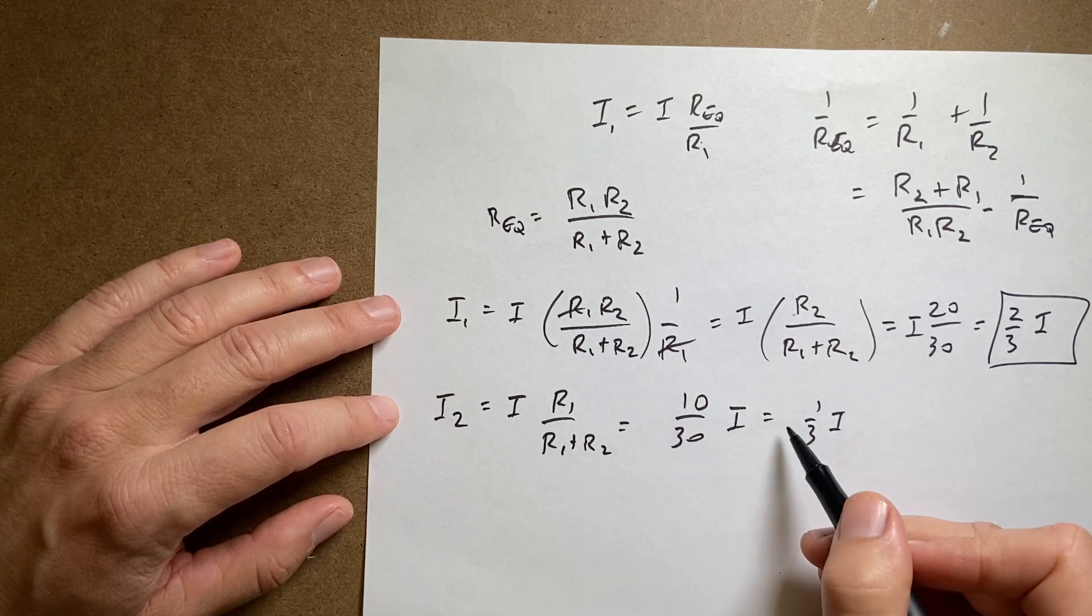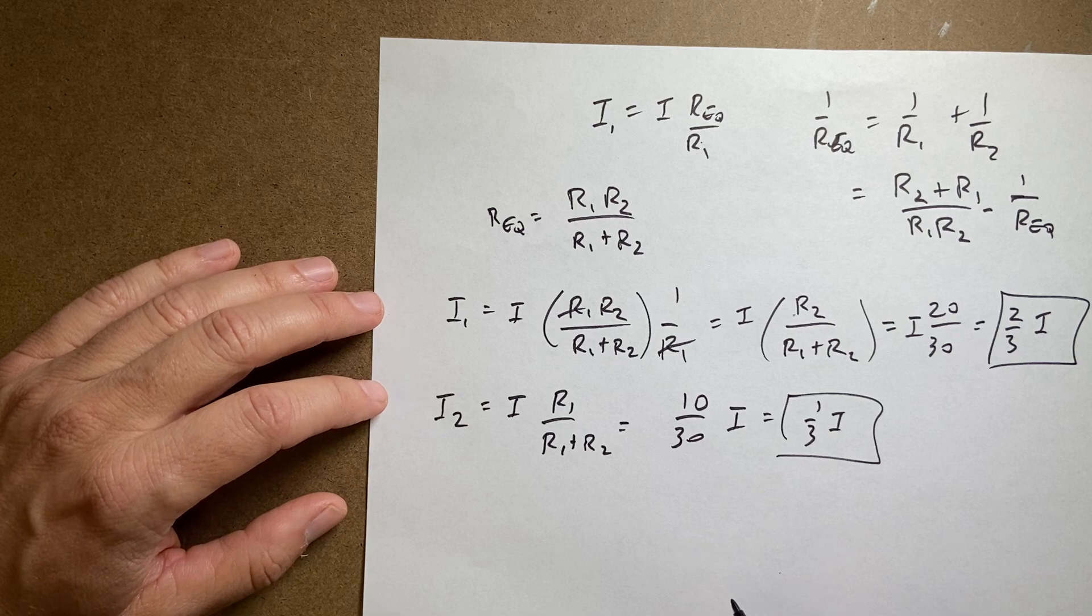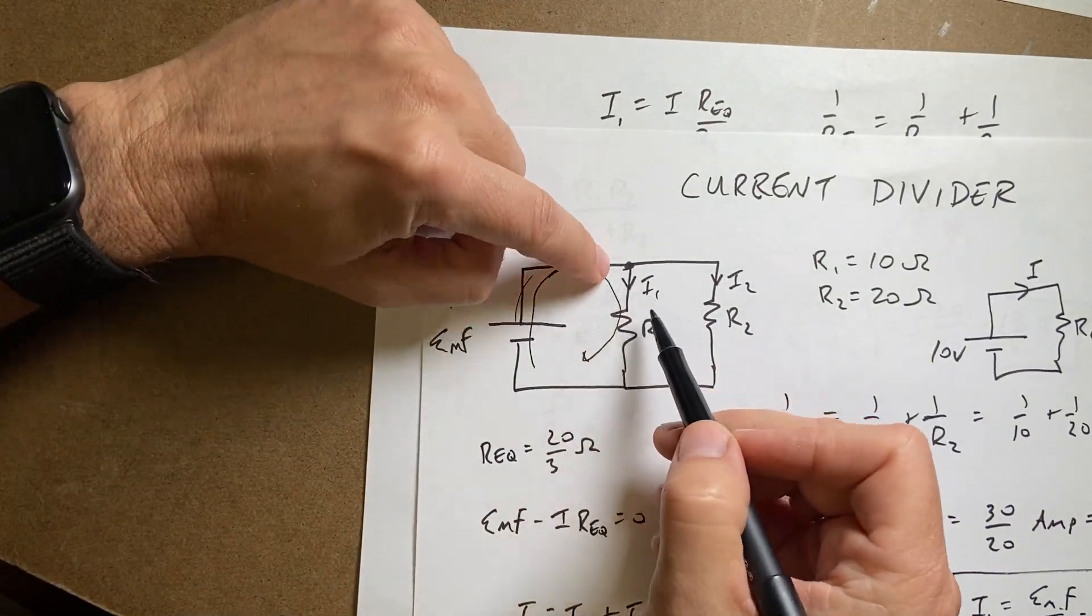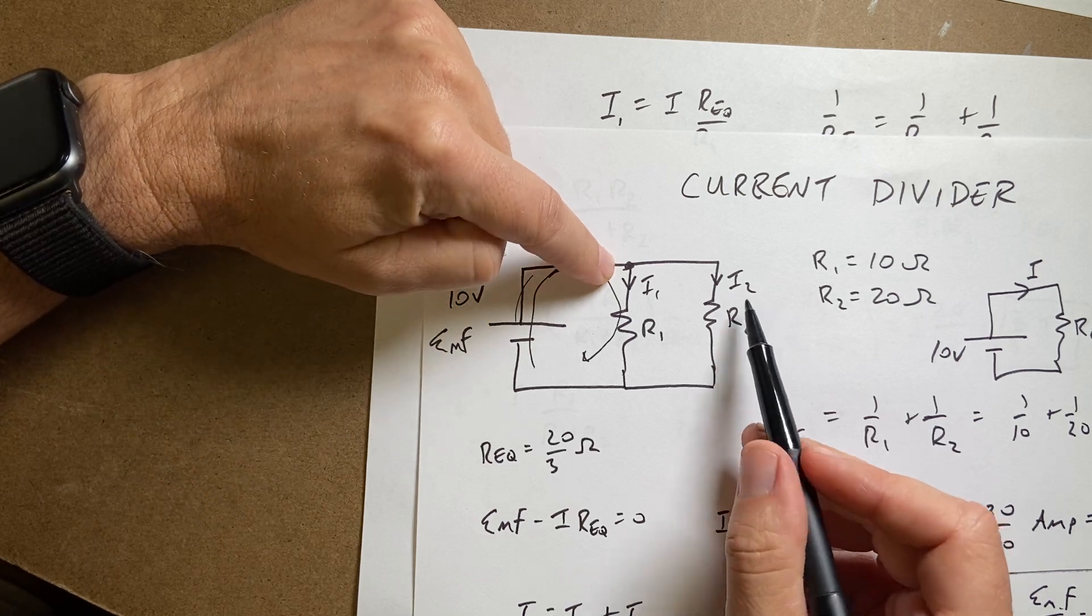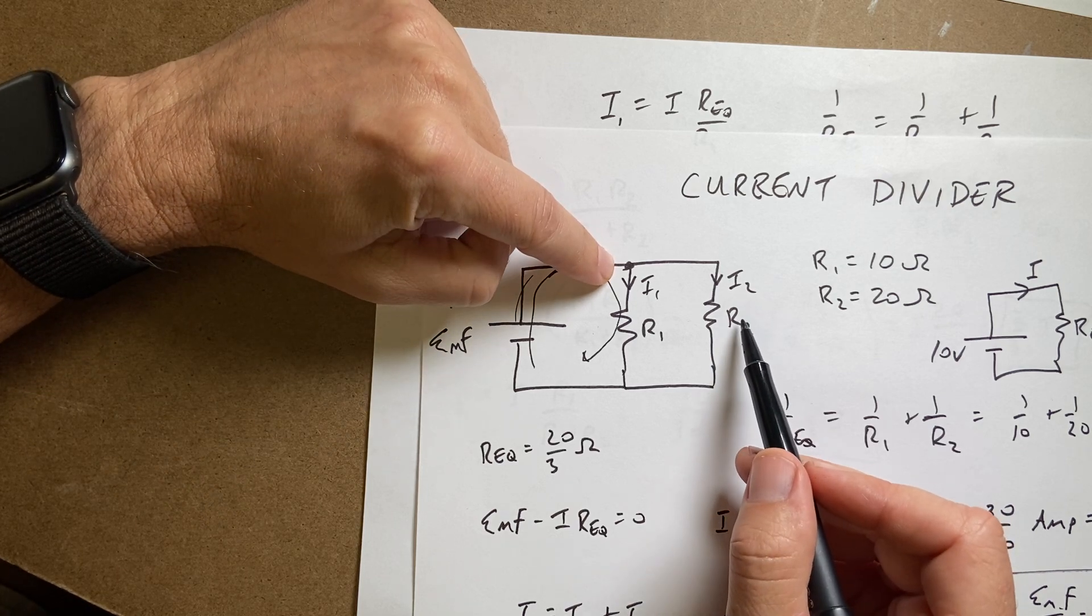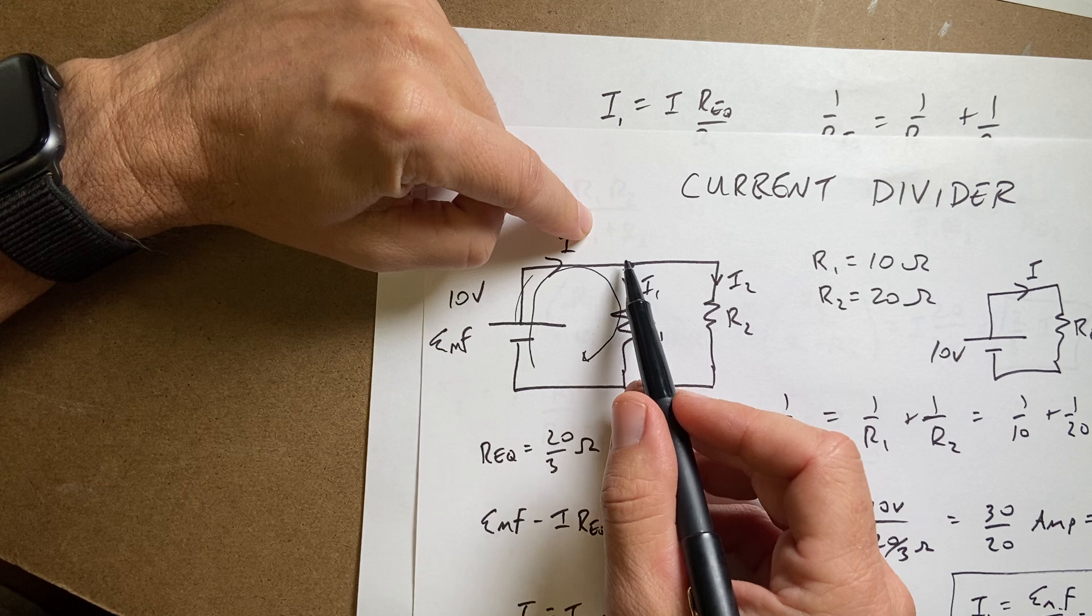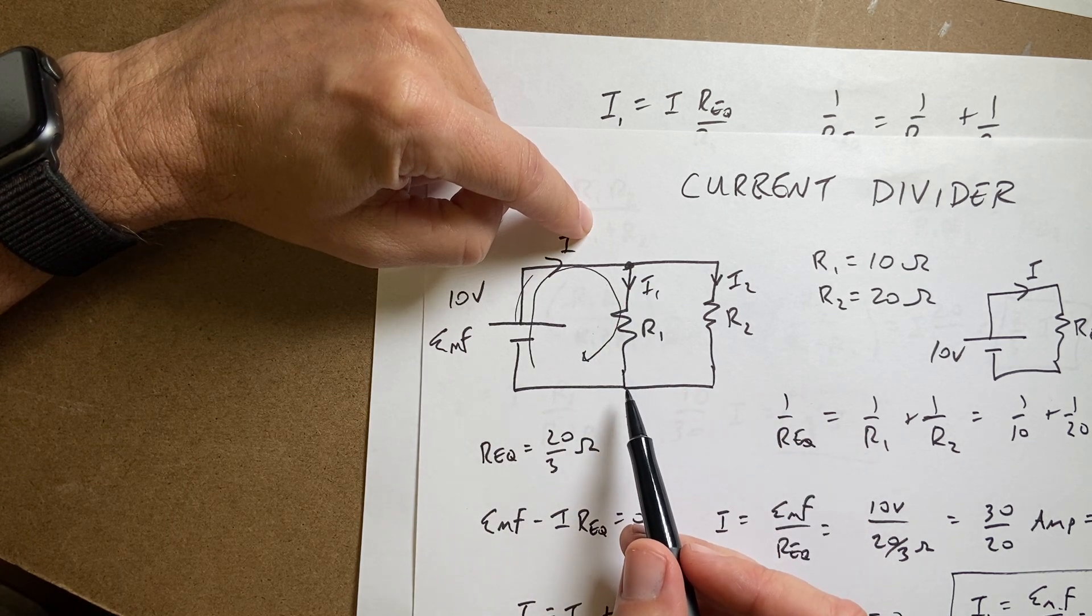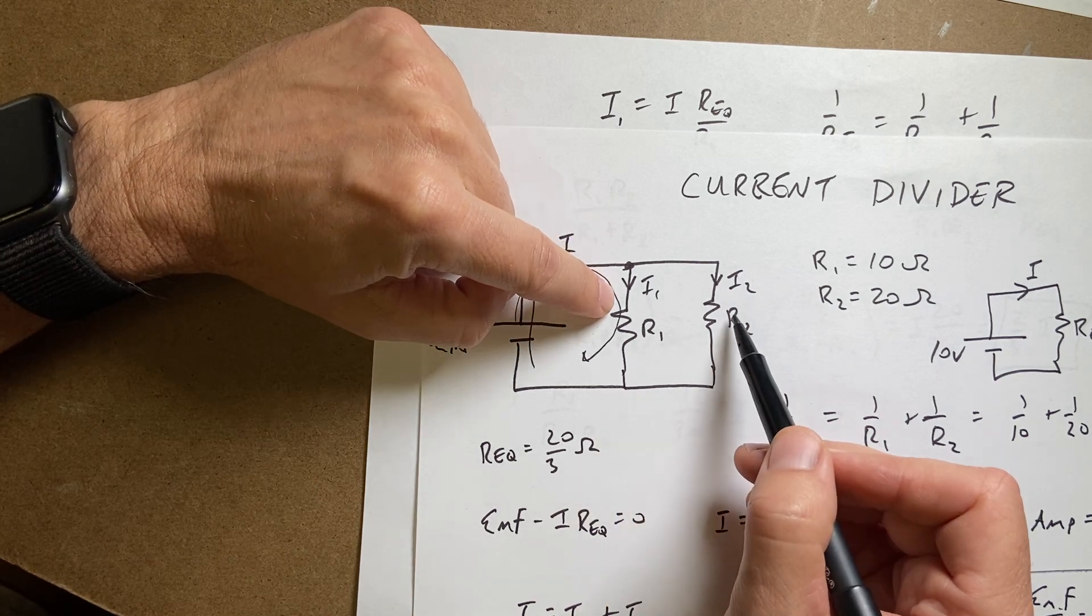So you see here I did indeed split the current. So when I have this current coming in, this one is 2 thirds of the total resistance. So 2 thirds of the total current goes through the other resistor. More current is going to go through the lower resistor. And the same thing is true over here.